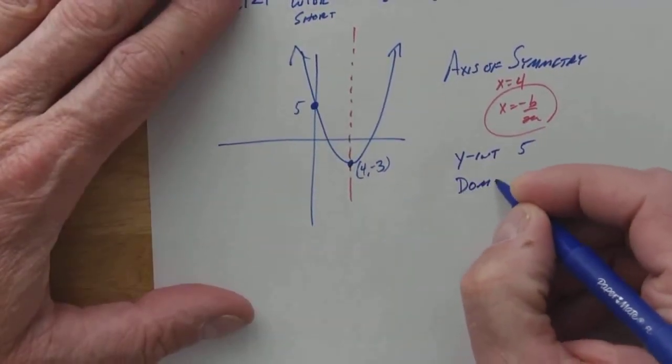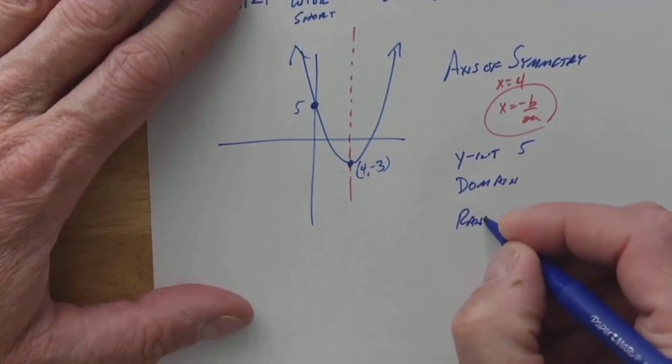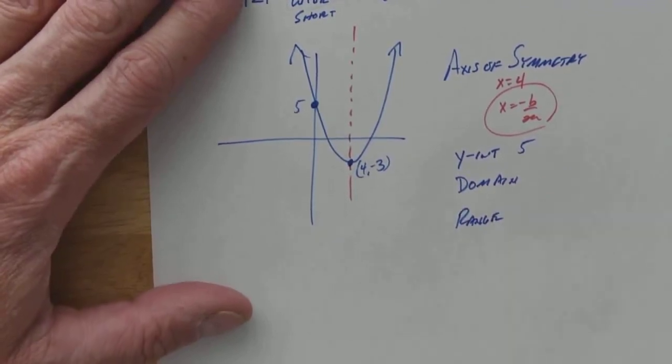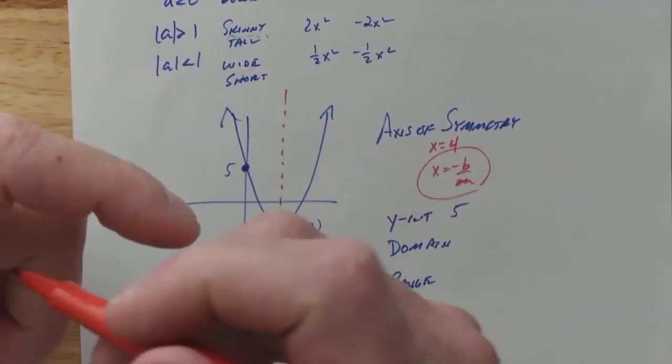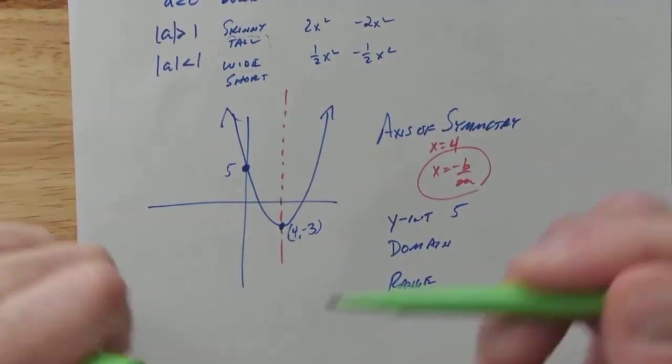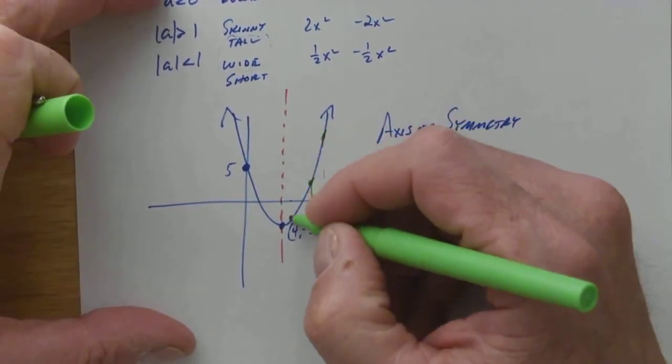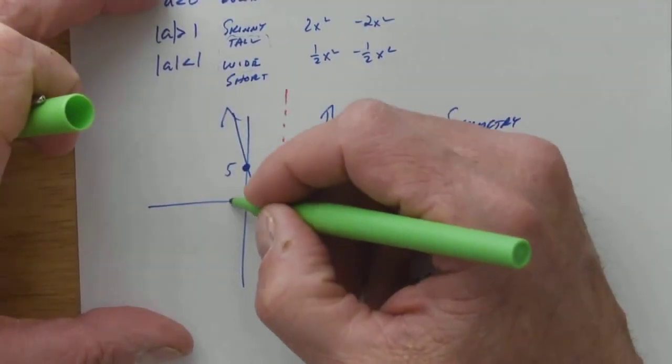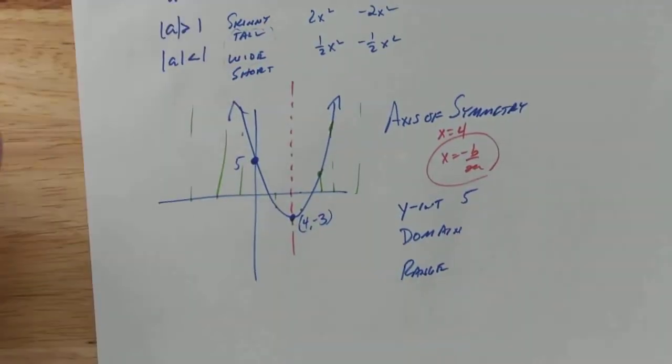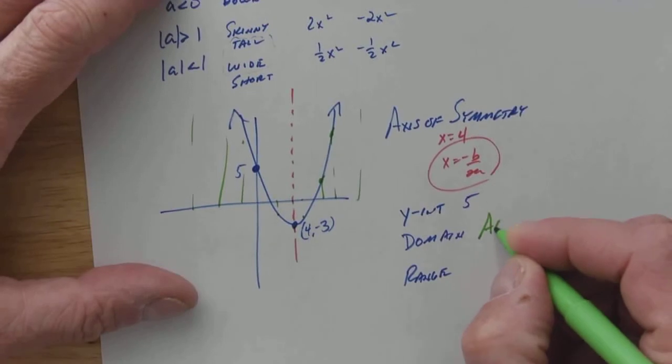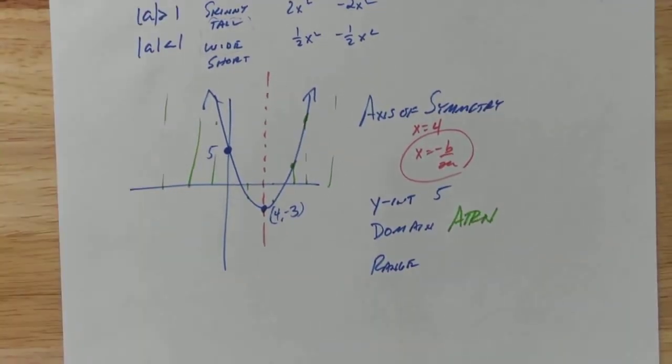So then what do we have? Another thing is domain and my range. Domain is what values of x can I plug in or what values of x were used in my graphs? Well, if we take a look at it, all these values of x are used. No matter where it's at, all those values of x were used. So my domain is always going to be all real numbers for parabolas. Always.